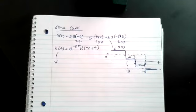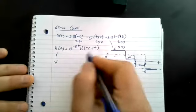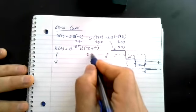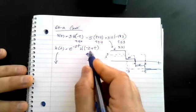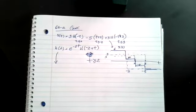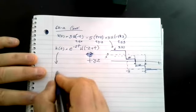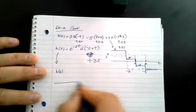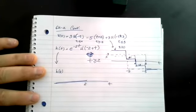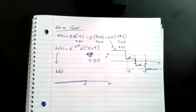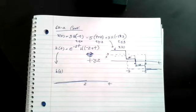Now for H(t): this has to be larger than zero, meaning T has to be larger or equal to two. So H(t) is zero all the way up to two. I don't need to worry about exactly what E to the minus two looks like for the graphical method. After T equals two, the value is E to the minus two T.